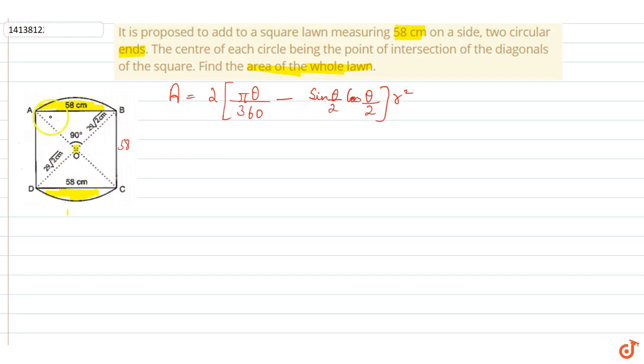This is a diagonal. The diagonals are perpendicular, so we have right angle triangle. The square diagonal bisects each other, so this will be equal. This will be 29√2 and 29√2. So we have radius of 29√2.